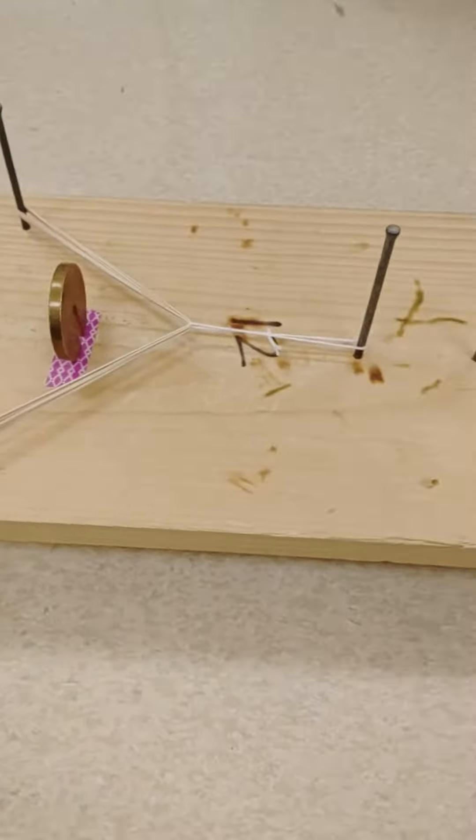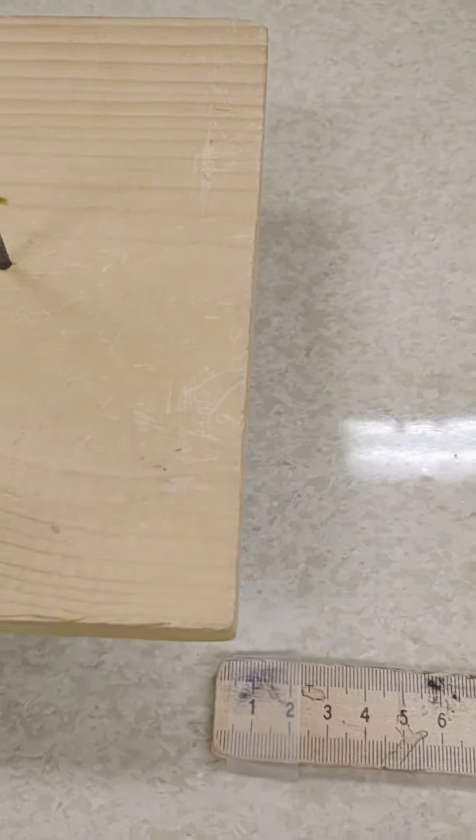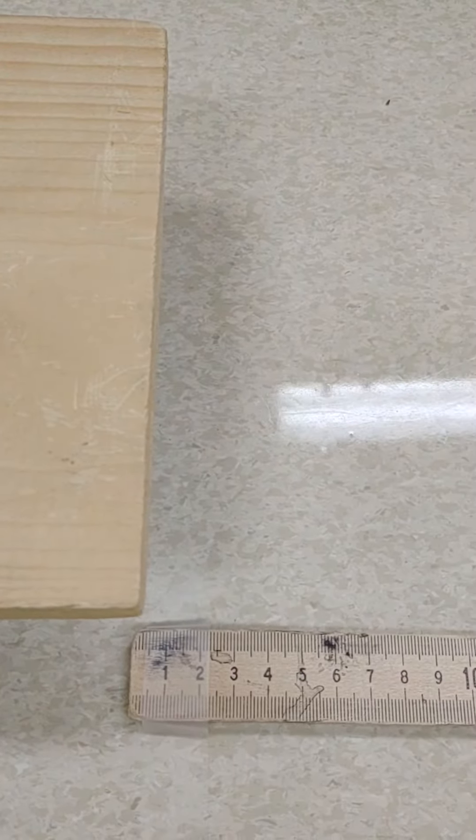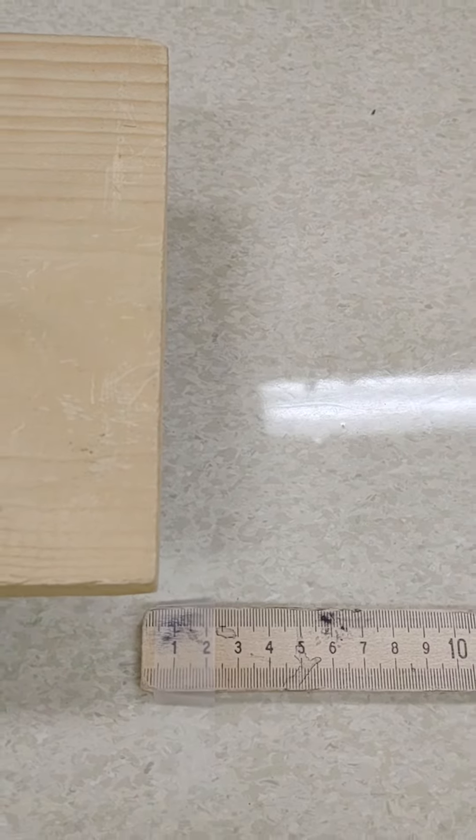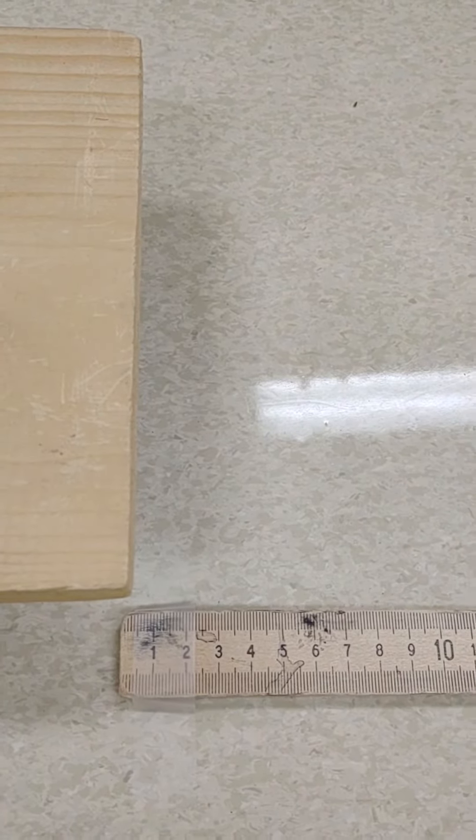So what's going to happen here is I'm going to cut that string, the mass is going to launch out the back end, and then we're going to measure how far forward the cart goes. You can see we're starting right at the front of the meter stick here.